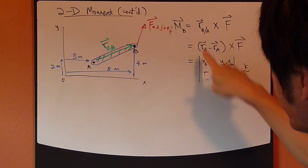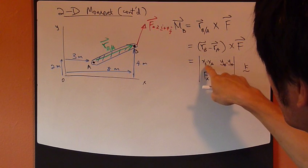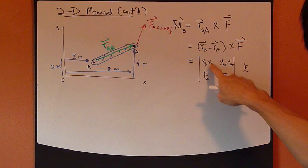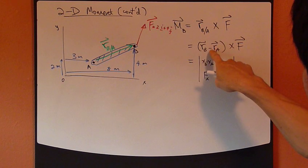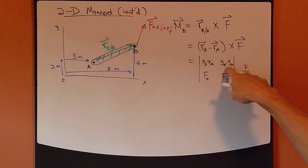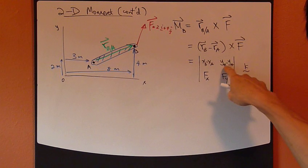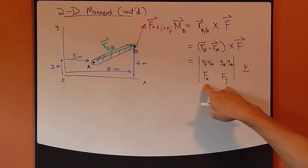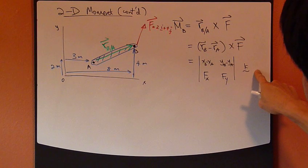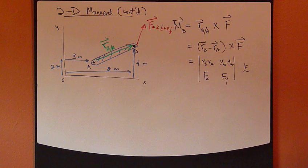So the first component would be X_B minus X_A, the I component of B minus I component of A. And then the J component, Y_B minus Y_A, and then F_X F_Y stays the same as before. This gives you K direction.